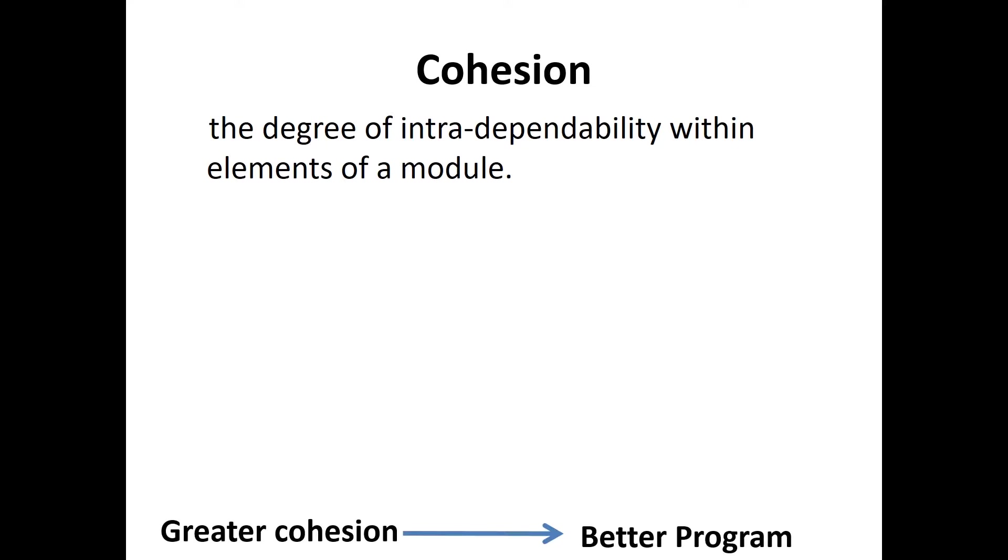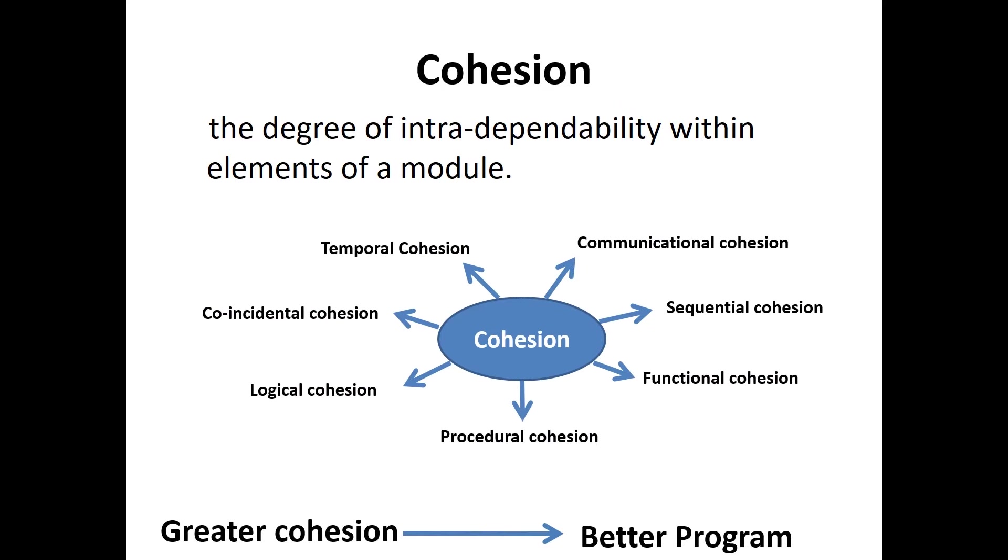This is a measure that defines the degree of interdependability within elements of a module. The greater the cohesion, the better the program design. There are seven types of cohesion.